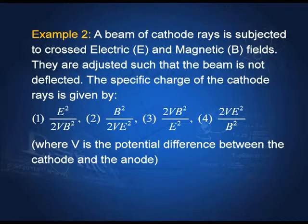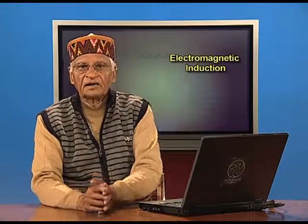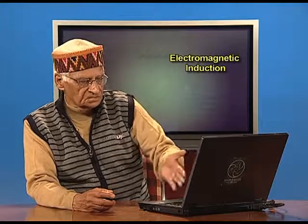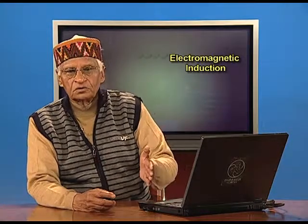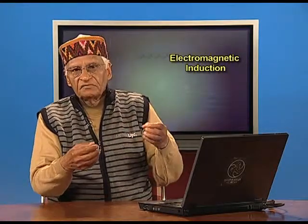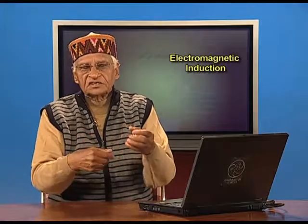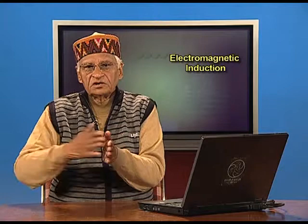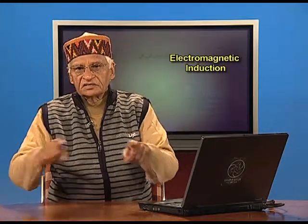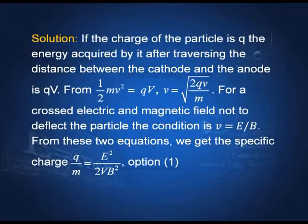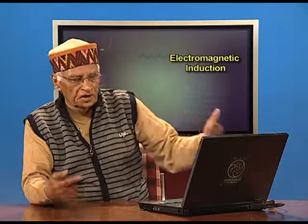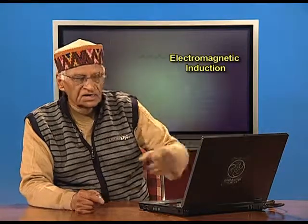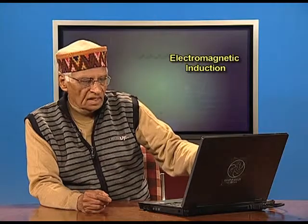The fields are adjusted such that the beam is not deflected. The specific charge of the cathode ray is q/m. In a cathode ray tube, electrons emitted from the cathode are attracted to the anode; V is the potential difference between them. If the charge of the particle is q, the energy acquired traversing from cathode to anode is qV. This equals the kinetic energy ½mv², giving the velocity v = √(2qV/m).